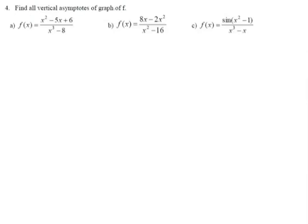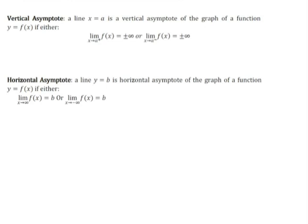Question number four is about vertical asymptotes of the graph of F. The vertical asymptote of any function: the line x equals A is a vertical asymptote of a function if the limit of the function as x approaches A from the right or from the left equals positive infinity or negative infinity.